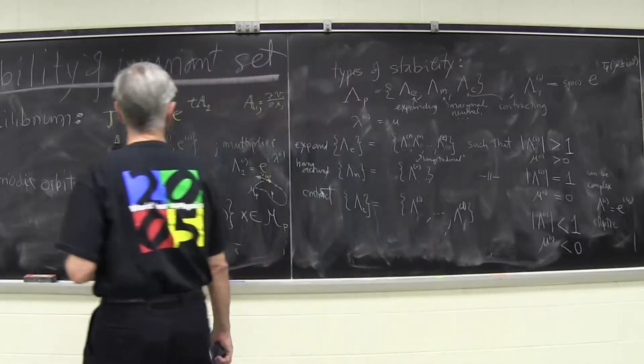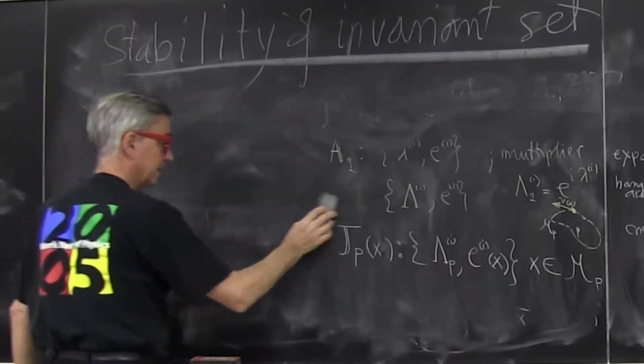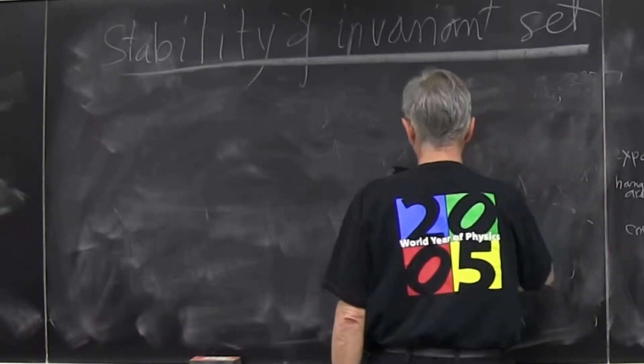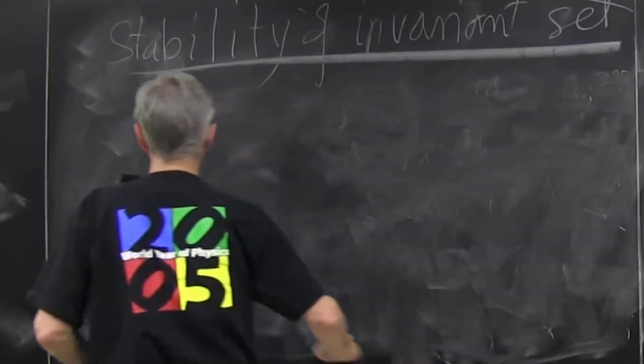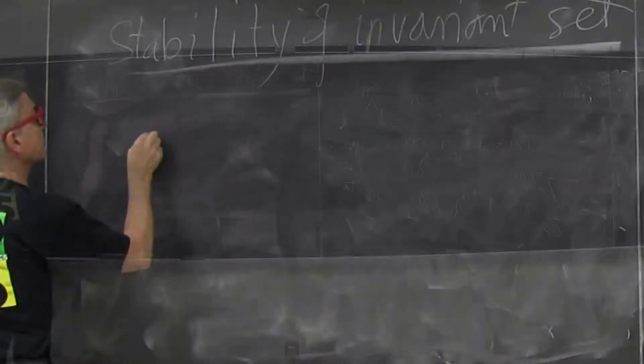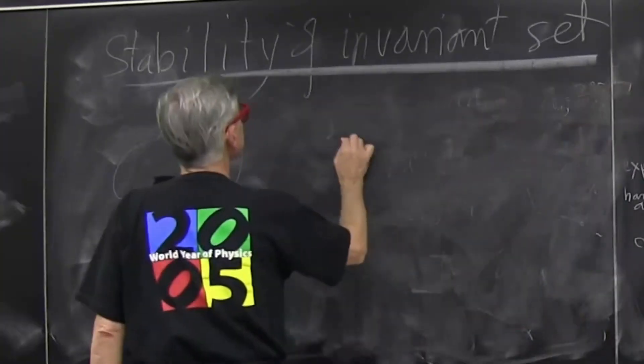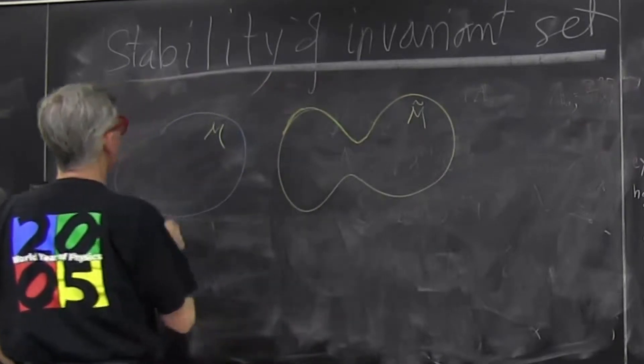Now the reason why they are invariant, I'll first draw a little picture and then do some algebra, but the picture is one that you're very used to. If I have my state space M, you have your state space.